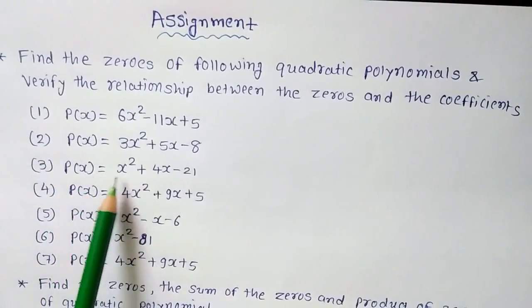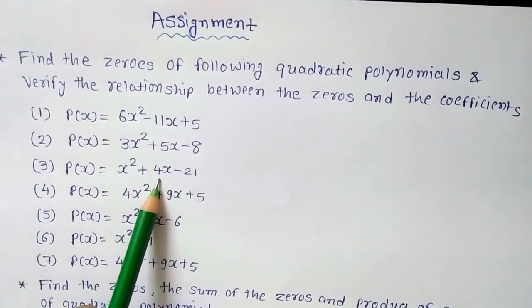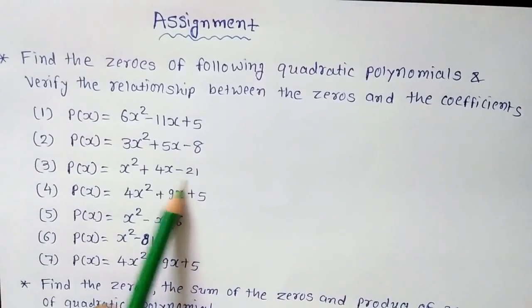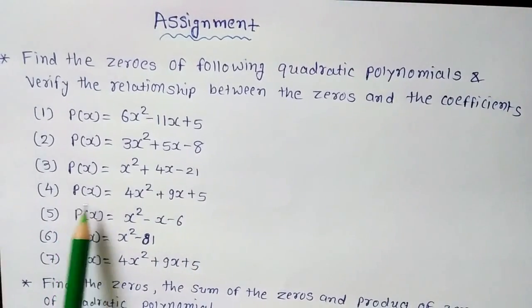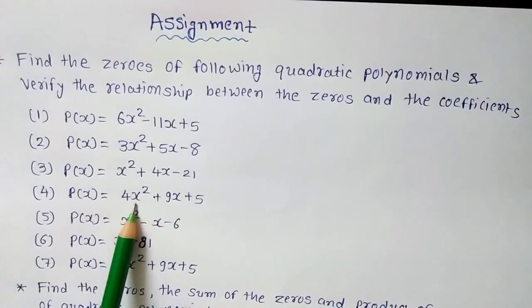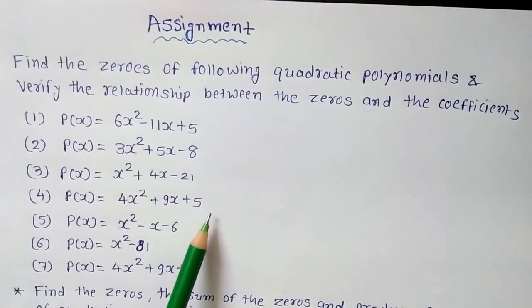Third one, p(x) is equal to x² plus 4x minus 21. Fourth one, p(x) is equal to 4x² plus 9x plus 5.